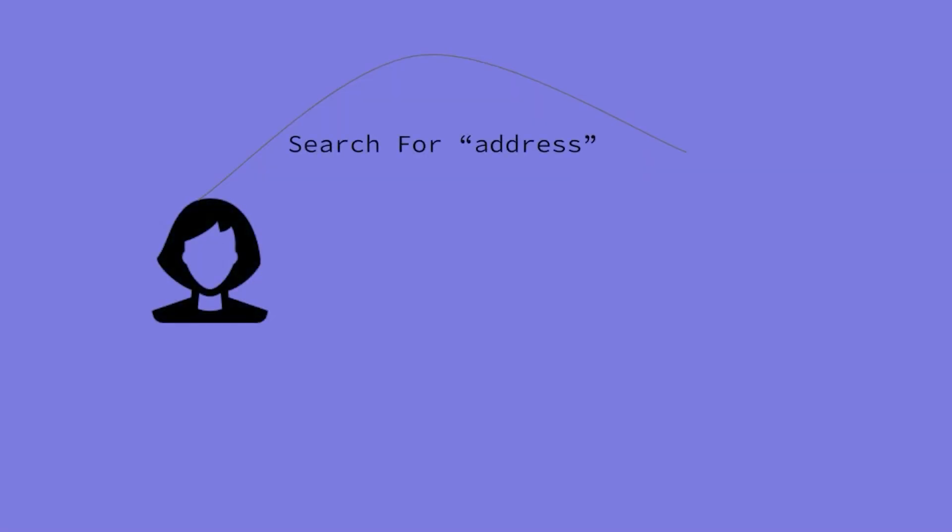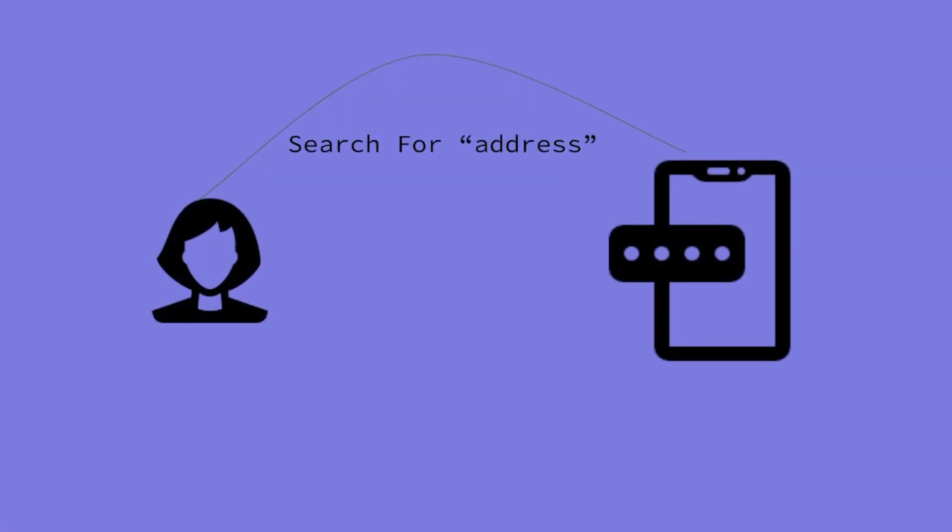The most used feature in any chat app is the search part. You want to search a particular message — maybe an address, a phone number, something someone sent you. Similarly on Discord, a lot of people wanted to use this feature to find particular text.